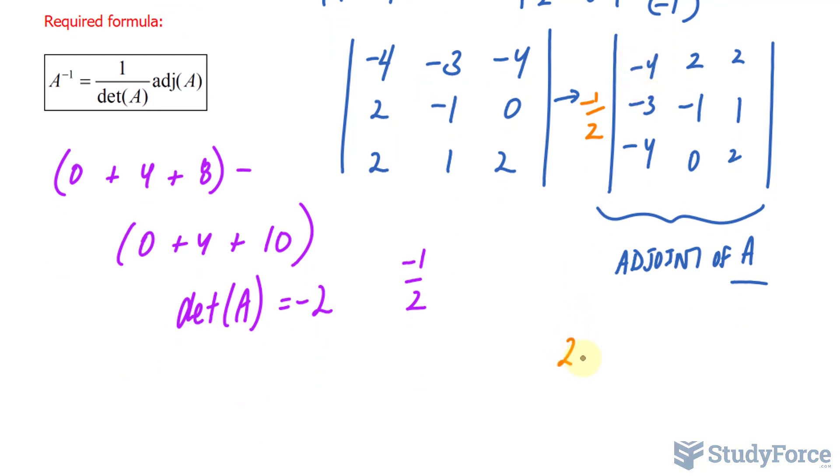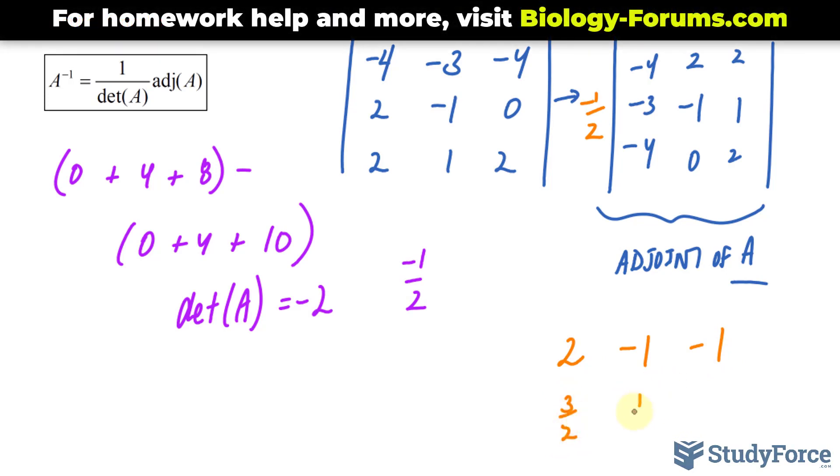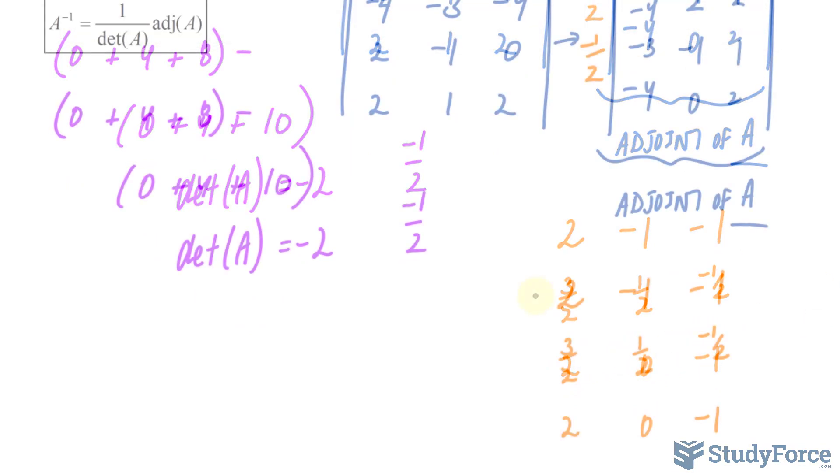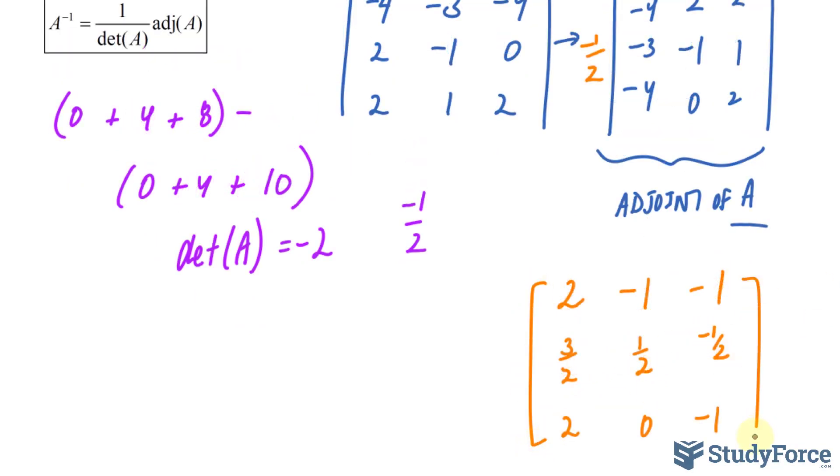Halving that gives us positive 2, and of course we're applying the negative. That becomes negative 1, negative 1, positive 3 over 2, half, negative 1, positive 2, 0, and negative 1. What you see right here is the inverse of our original matrix.